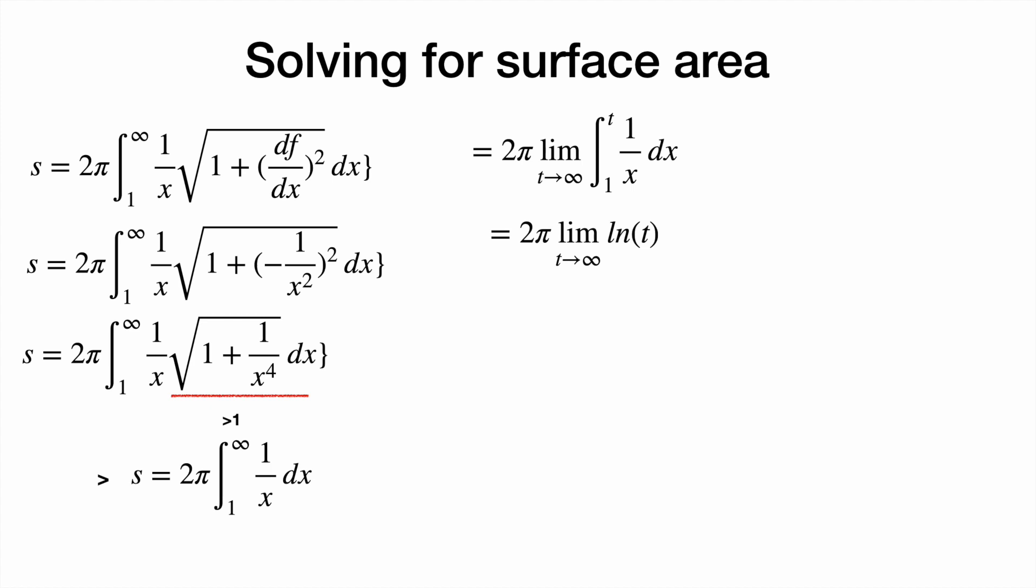Then we can integrate 1 over x to get ln x and plug in our boundaries. Plugging in 1 will get a 0, so we're left with 2 pi ln t. And because of the shape of logarithms as t diverges, the logarithm does as well.